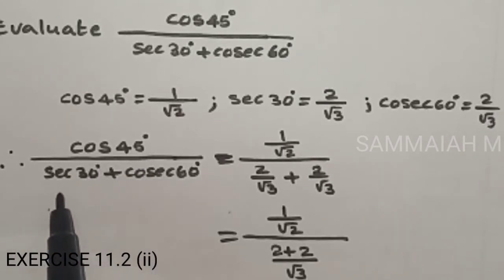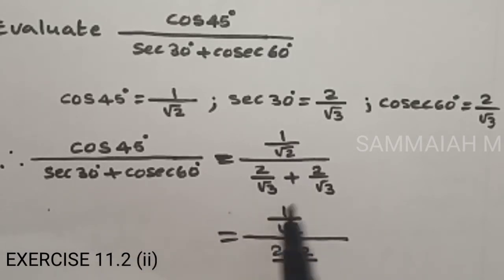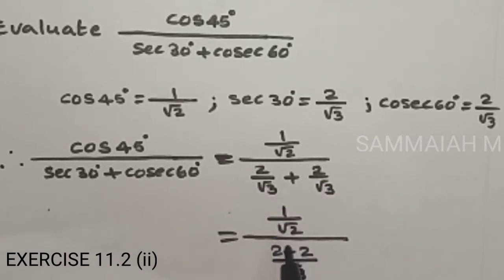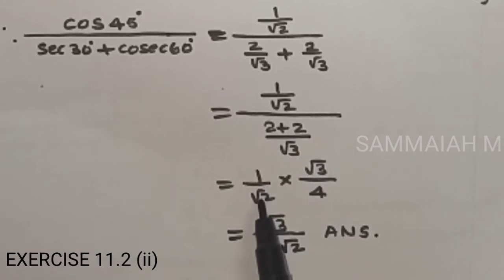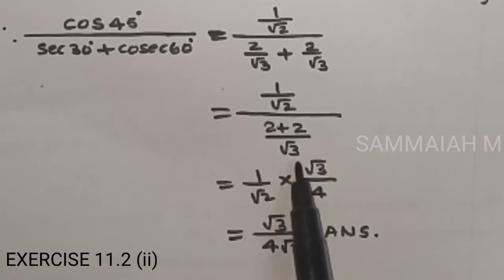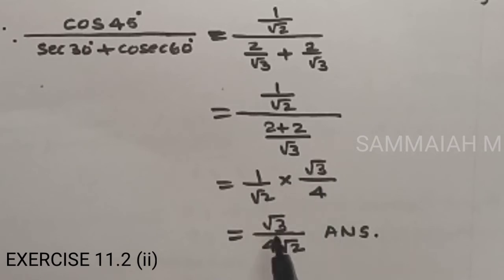Therefore cos 45 degrees upon secant 30 degrees plus cos 60 degrees equals 1 by root 2 upon 2 by root 3 plus 1 by 2. In the denominator, root 3 is the LCM and numerator is 2 plus 2 equals 4. Taking reciprocal of the denominator: 1 by root 2 multiplied by root 3 upon 4, giving root 3 upon 4 root 2.